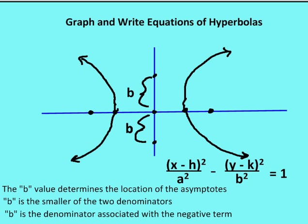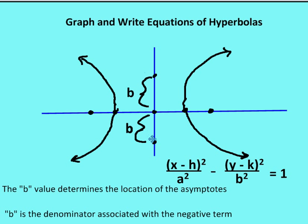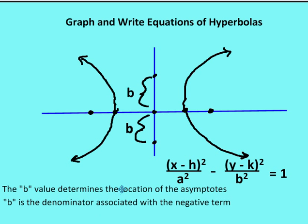The b value is the distance from the center along an axis perpendicular to the transverse axis — you move b units up and down from the center to find reference points. There isn't a named characteristic point at those locations; rather, the b value helps define the slope of the asymptotes and doesn't directly correspond to a vertex or other labeled feature of the hyperbola.